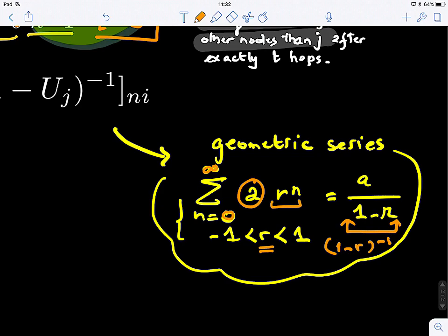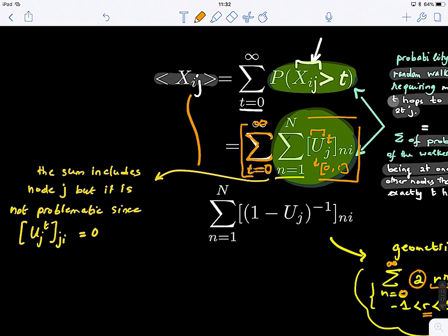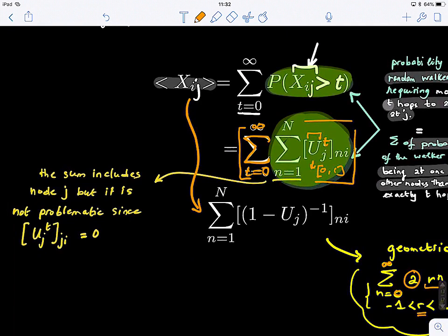So this means that the average number of hops for the random walker to reach his destination is defined as the sum over all nodes of this quantity. So now we can compute it. But what do you guys know, there is a remark here.